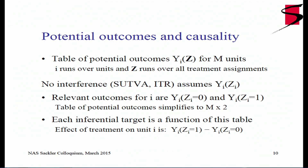Under no interference, the table of potential outcomes simplifies to M rows — one for each unit — and two columns. The inferential targets, the quantities we want to estimate, are just functions of this table. For example, an inferential target could be the individual treatment effect for unit i — Y_i when treated minus Y_i when not treated. These are called potential outcomes because in practice we can only either treat or not treat a person, so one of the two will be unobserved.